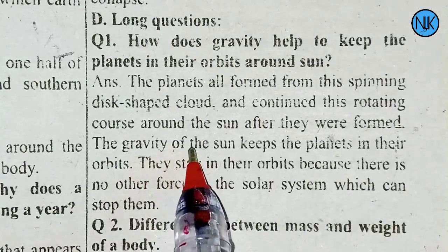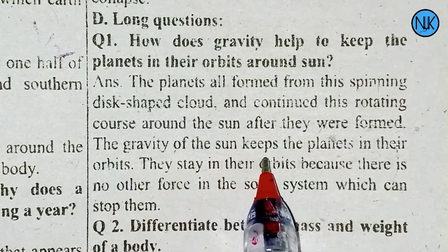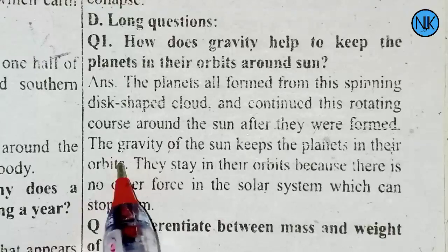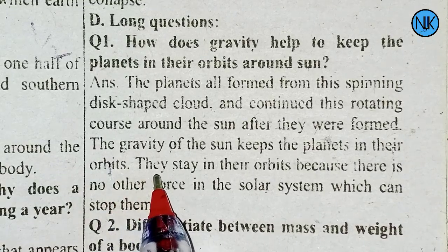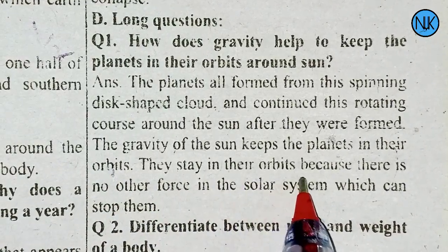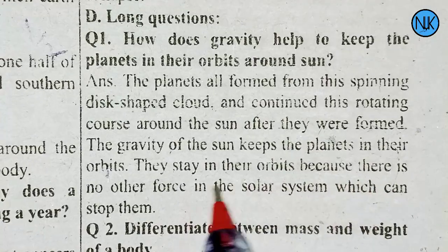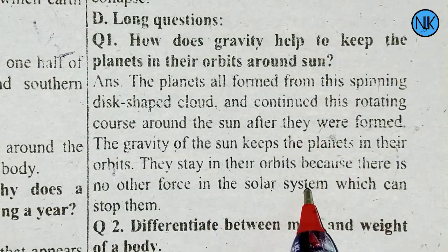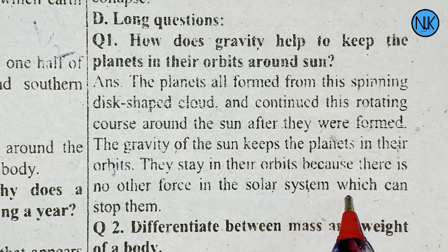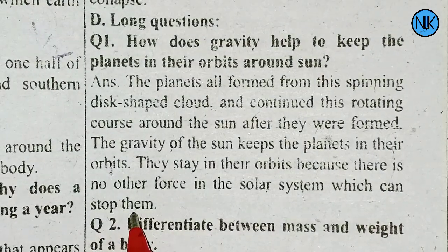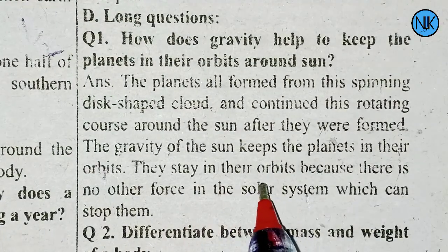The gravity of the sun keeps the planets in their orbits. They stay in their orbits because of the sun's gravitational force.